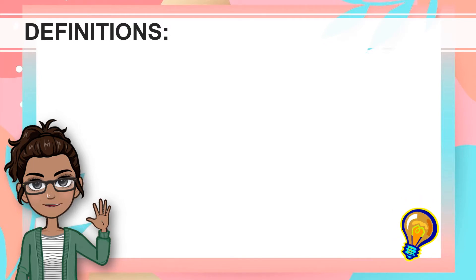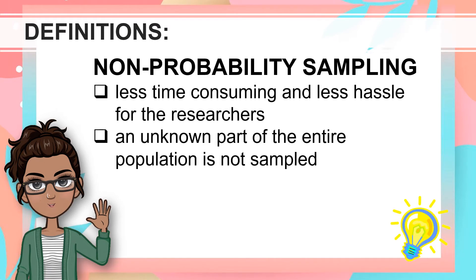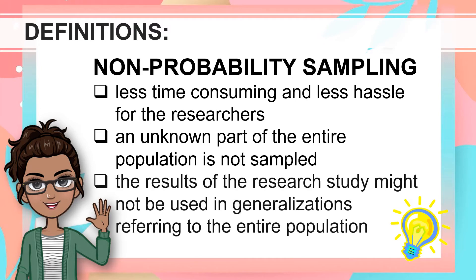Using non-probability sampling could be less time-consuming and less hassle for the researchers. The downfall of this sampling method is that an unknown part of the entire population is not sampled, meaning the sample may or may not accurately represent the entire population. Thus, the results of the research study might not be used in generalizations referring to the entire population, according to Explorable.com, 2009.